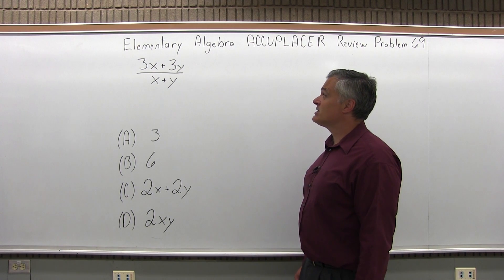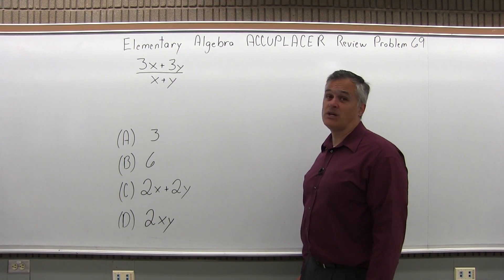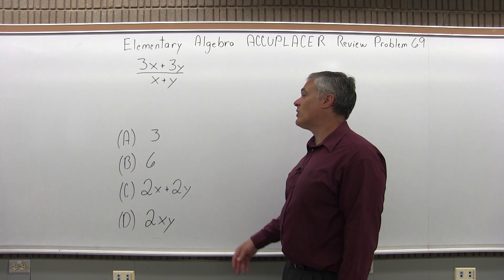We have 3x plus 3y over x plus y equals which one of the following four options?